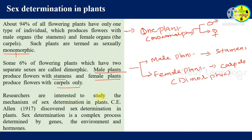Researchers are interested to study the mechanism of sex determination in plants. Allen discovered sex determination in plants. Sex determination is a complex process determined by genes, the environment, and hormones. Certain genes, environmental conditions, and hormones are all responsible for determining the sex of the plant and flower.